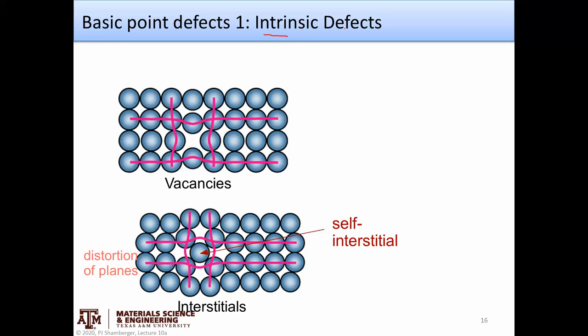First we're going to talk about intrinsic defects, and that means defects that occur that are not related to chemical impurities. So if I have a system — this could be any lattice, it could be iron, silicon, or carbon — we could have two potential things happen: we could have vacancies, where a missing atom exists on a lattice site, or we could have interstitials. When that interstitial is the same kind of atom as occurs elsewhere in the material, we call that a self-interstitial.